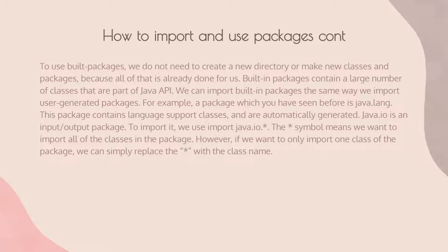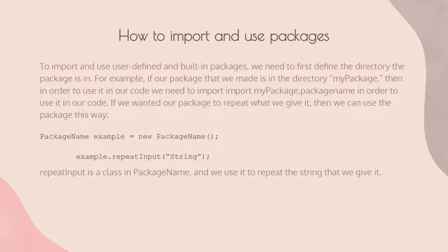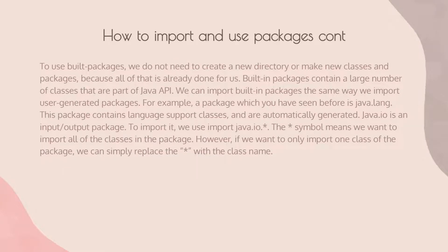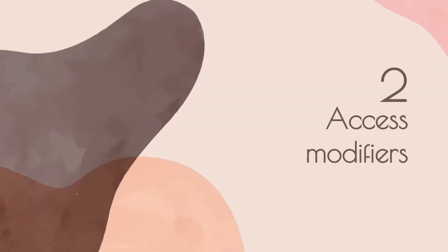However, if we only want to import one class from a package, we can replace the asterisk with the class name. For example, instead of 'import java.io.*', if we only wanted the class 'repeatInput', we would write 'import java.io.repeatInput' to import only that class instead of the whole package.